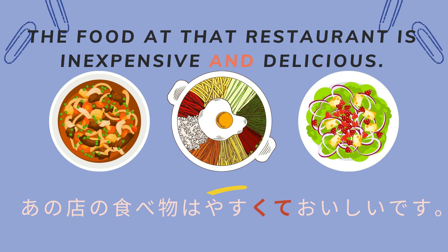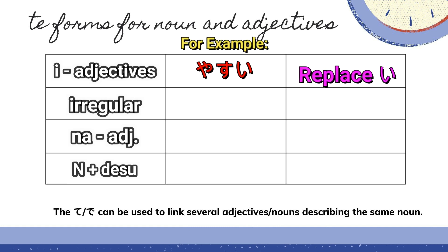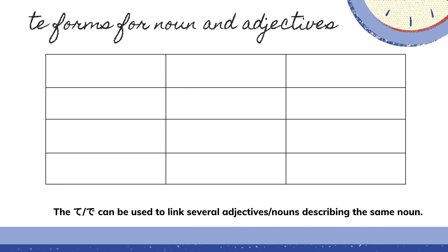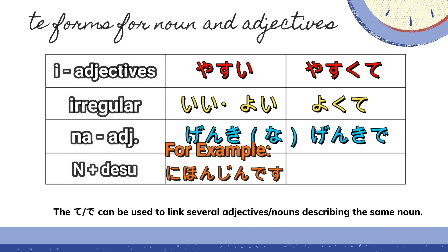You'll notice that 'yasui,' instead of remaining 'yasui,' becomes 'yasukute oishii desu.' That is where we used the Te-form. In this part, I will show you how to conjugate nouns and adjectives into Te-form and use it to connect two sentences.